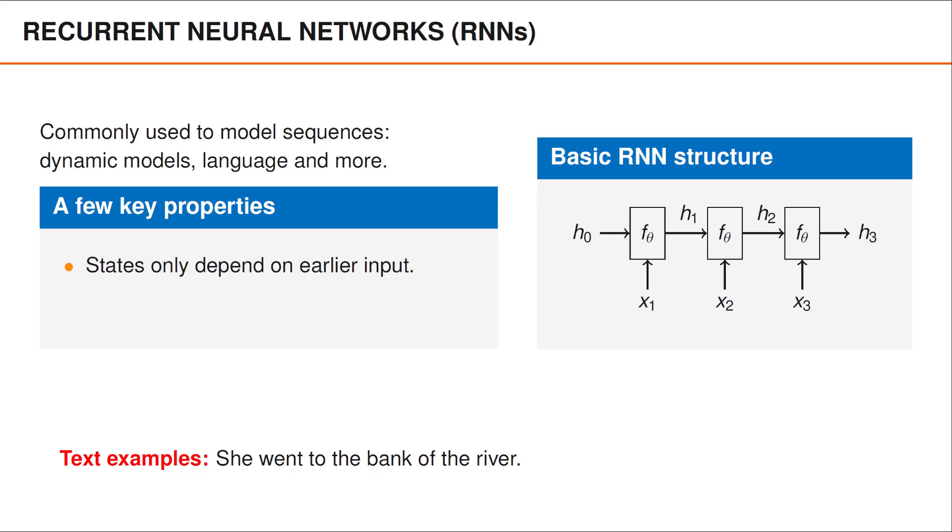The hidden state, which is also the feature vector computed when we input the word embedding for bank, therefore only knows that she went to a bank and has no means of knowing that it is in fact a river bank instead of a financial institution.